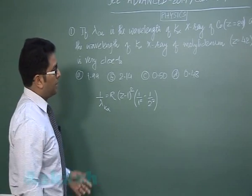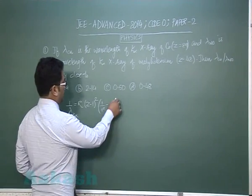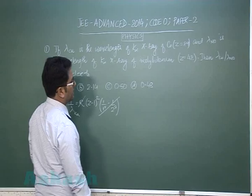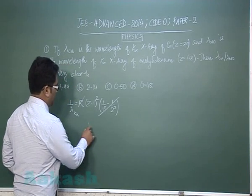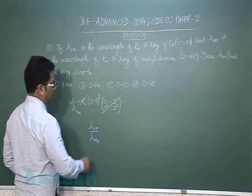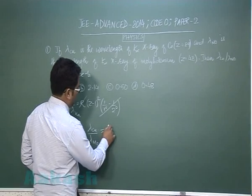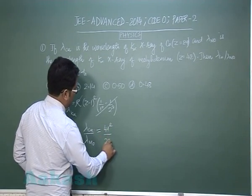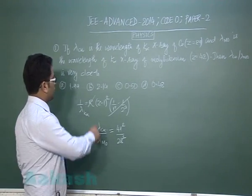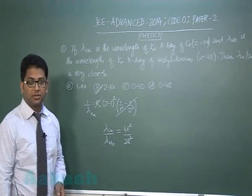You can see that for both copper and molybdenum, the Rydberg constant and the bracket term are the same. So quite obviously, lambda_copper / lambda_molybdenum = (Z_Mo - 1)² / (Z_Cu - 1)², which equals 41² / 28². This comes out to be very close to 2.14. Now we'll see question number two.